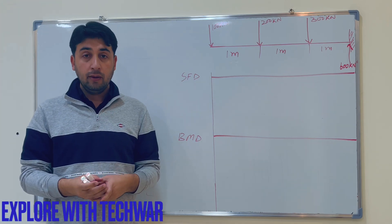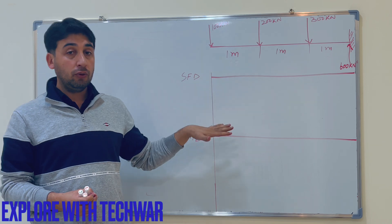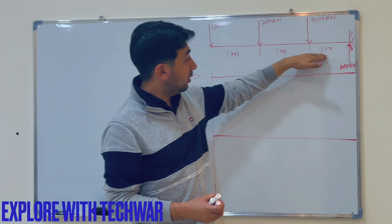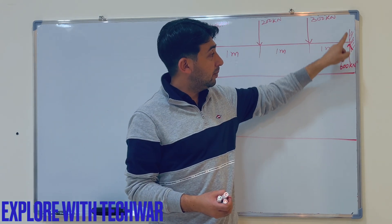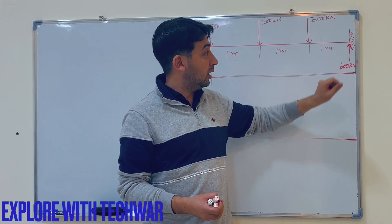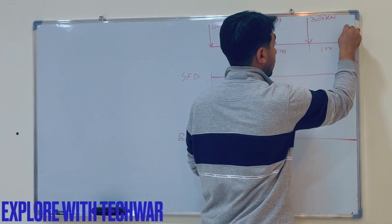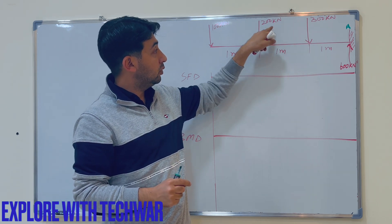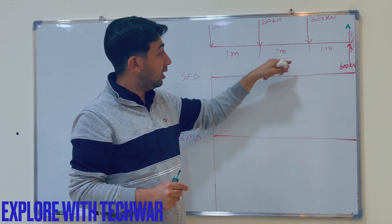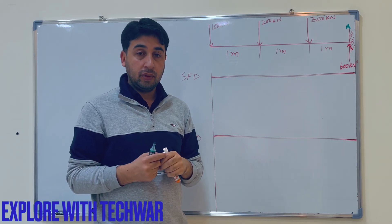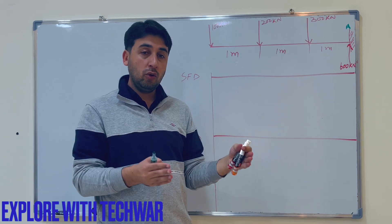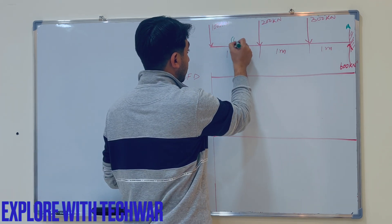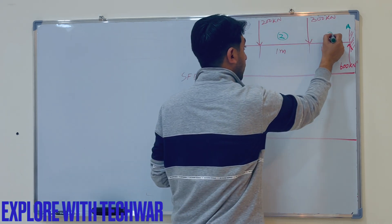Hello everyone, in this video we will draw the shear force and bending moment diagram of a cantilever beam with point loads. We have a cantilever beam fixed at point A, with a reaction force Ay of 600 kilonewtons. Three point loads are acting: 300 kilonewtons, 200 kilonewtons, and 100 kilonewtons, all 1 meter apart. We need to find the shear forces and bending moments at sections 1, 2, and 3.